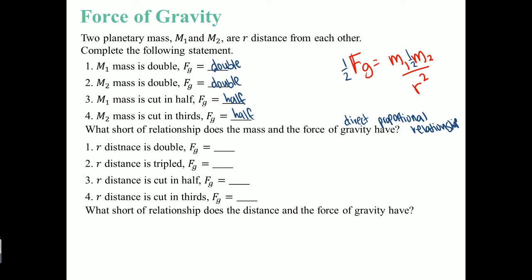That goes for the same way as if you do that to mass 2. So what type of relationship does mass and the force of gravity have? It has a direct proportional relationship. That means if one doubles, the other one doubles. If one is cut in half, the other one is half. Number 4 is if it's cut in thirds, so this is also going to be cut in thirds as well.